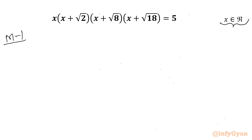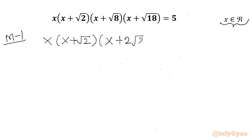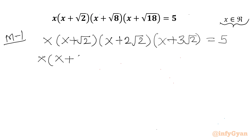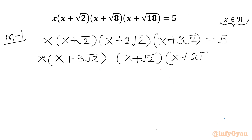Let me write Method 1. We write our equation as x times (x plus √2) times (x plus √8) times (x plus √18) equal to 5. Now √8 can be written as 2√2, and √18 can be written as 3√2. Now let us write the first and last brackets together, and the second and second-last terms together, giving x times (x plus 3√2) times (x plus √2) times (x plus 2√2) equal to 5.